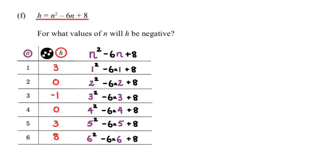As you can see, the question says for what values of n will h be negative. h is positive when n is 1 and when it's 5 and 6, but it's negative when it's 3. We can see that it's 0 at 2 and 4, when n equals 2 and 4. Let me show you how this looks if I plot these points on an h graph.